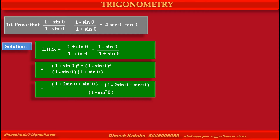Cancelling 1 and -1, and cancelling sin²θ and -sin²θ, we get at the numerator: 2sinθ minus minus plus 2sinθ, that is 4sinθ, upon 1 - sin²θ, which equals cos²θ.